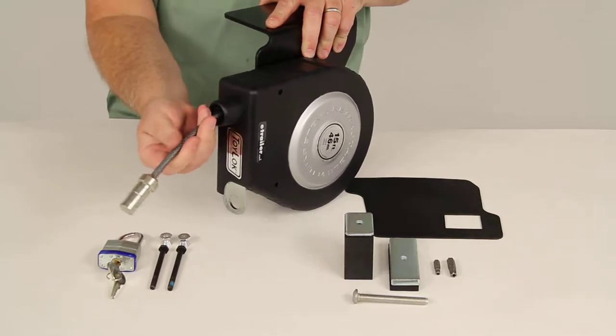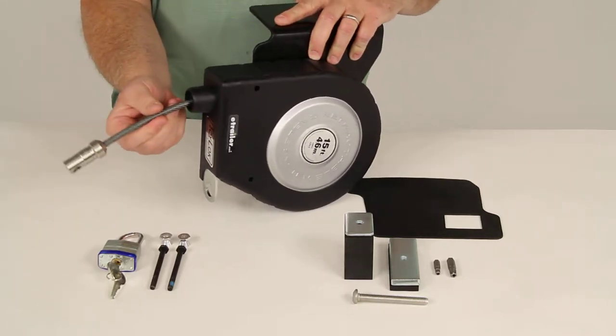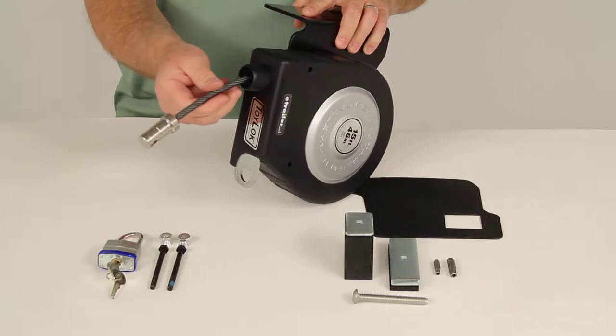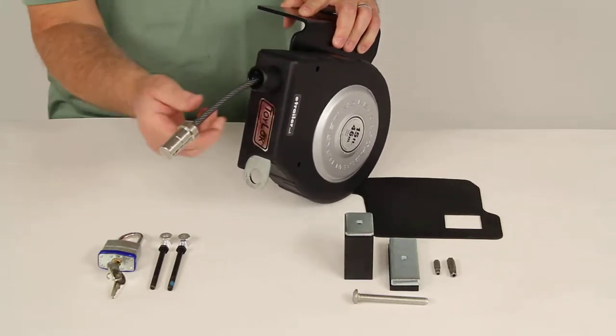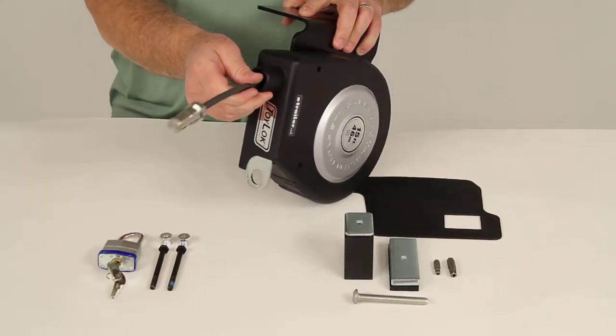It's made of braided steel construction which is virtually impossible to cut through. It has a nice PVC coating on it to reduce abrasion and rub marks. You don't want to damage any of the items you're trying to secure.